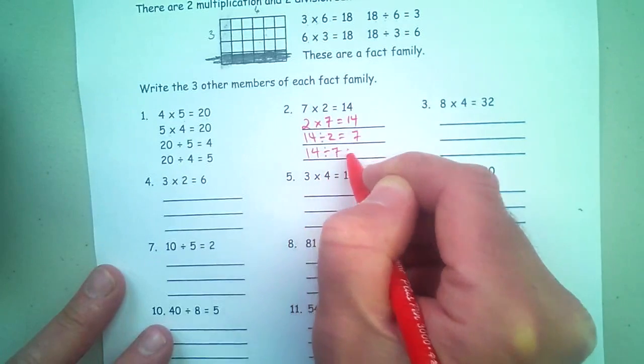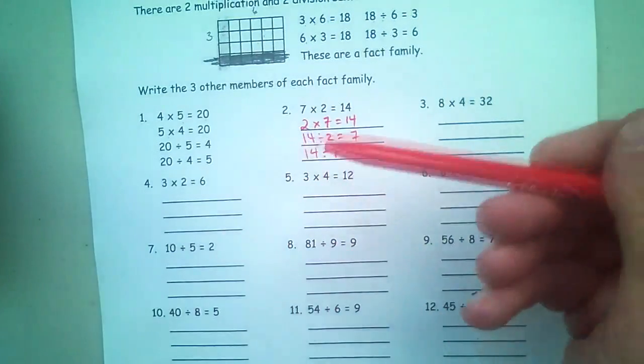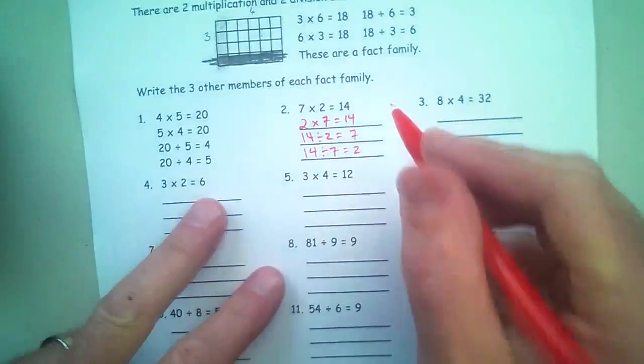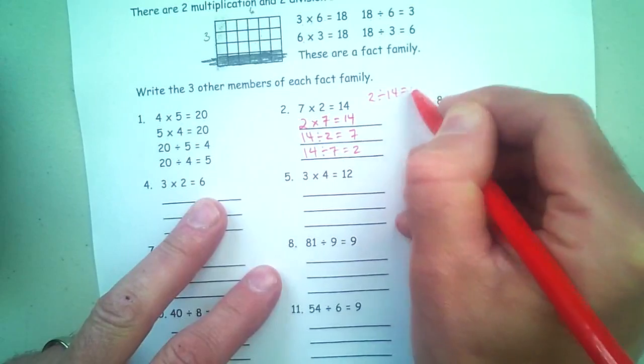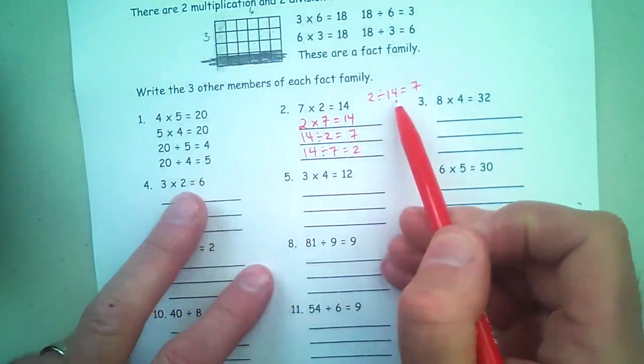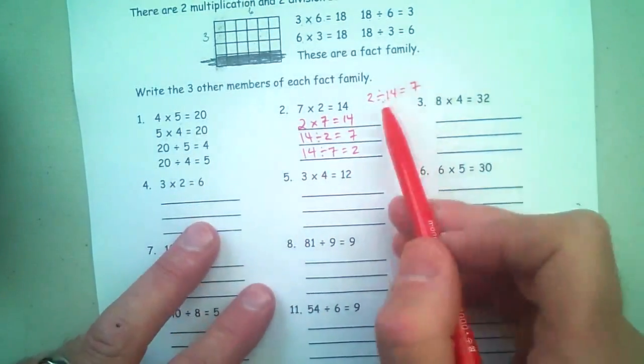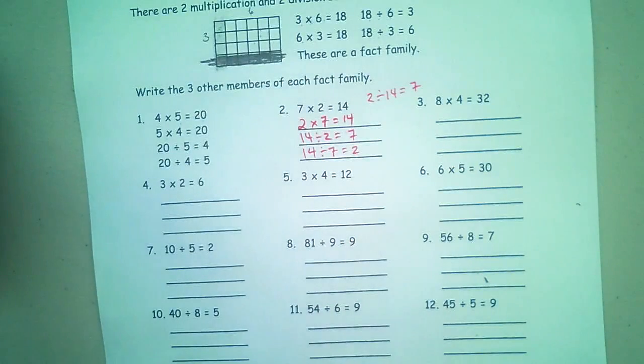So if I was to write something like 2 divided by 14 equals 7, you'd be getting into decimals, and it's a whole other field of math that we're not going to touch right now.